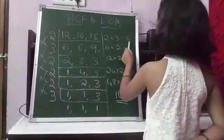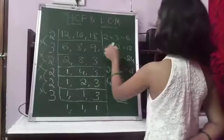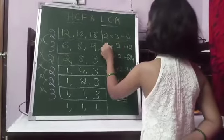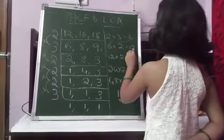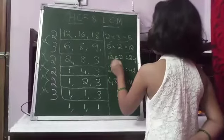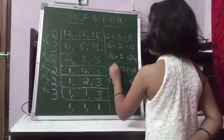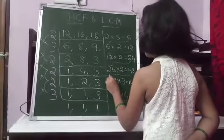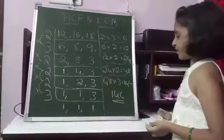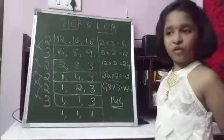2 3s are 6. See again we will get down here. 6 2s are 12. 12 2s are 24. 24 2s are 48. 48 3s are 144.